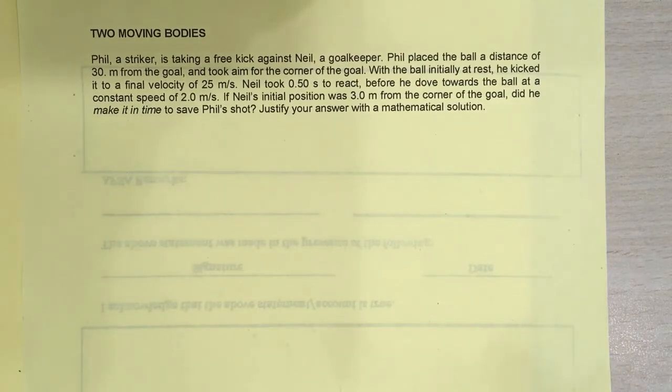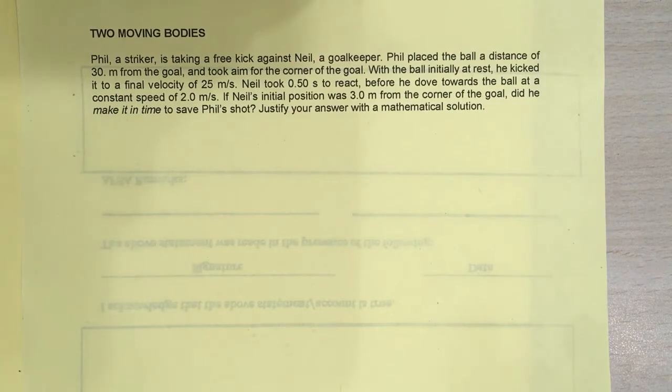Phil, a striker, is taking a free kick against Neil, a goalkeeper. Phil placed the ball a distance of 30 meters from the goal and took aim for the corner of the goal. With the ball initially at rest, he kicked it to a final velocity of 25 meters per second. Neil took 0.50 seconds to react before he dove towards the ball at a constant speed of 2 meters per second. If Neil's initial position was 3 meters from the corner of the goal, did he make it in time to save Phil's shot? Justify your answer with a mathematical solution.